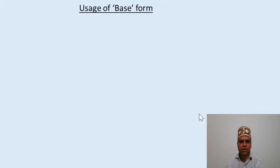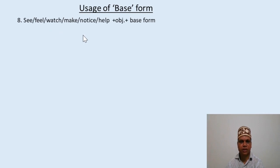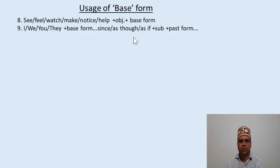Verbs like see, feel, watch, make, notice, help — when followed by an object, the object is then followed by the base form. The linking words 'since,' 'as,' 'as do,' 'as if' are followed by the past form — but before 'since,' 'as do,' 'as if,' we use the base form.